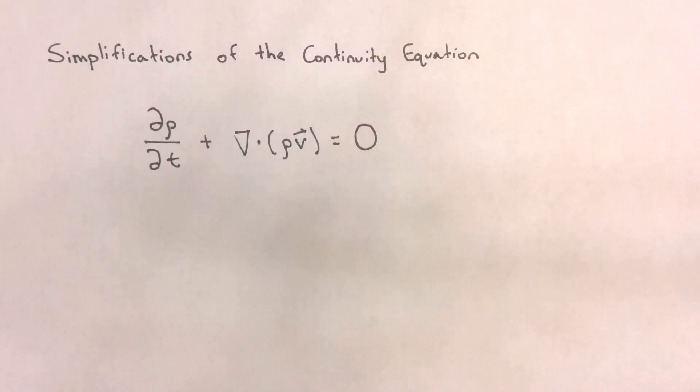This will be a short video where we make some simplifications to the differential form of the continuity equation. Let's start with our general continuity equation. We have that the partial derivative of density with respect to time plus the divergence of density times the velocity vector equals zero.